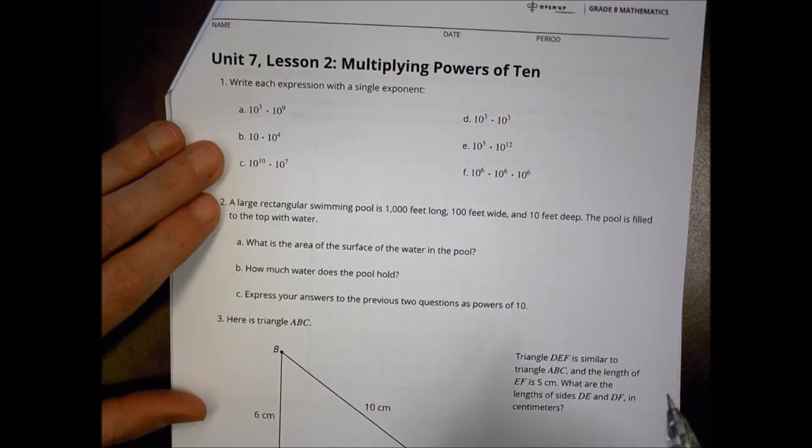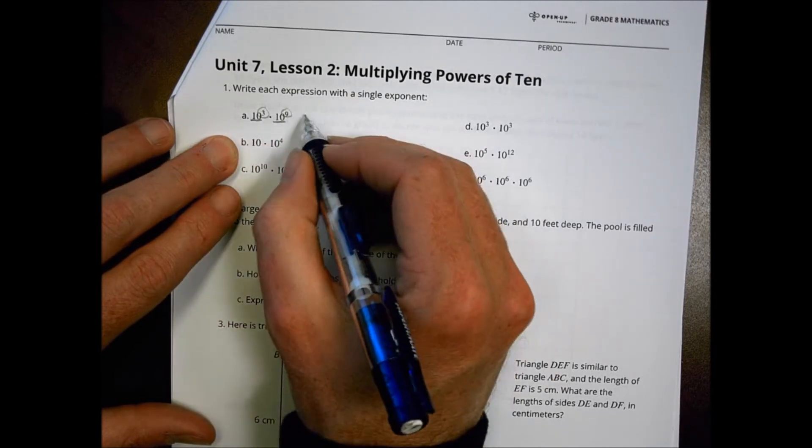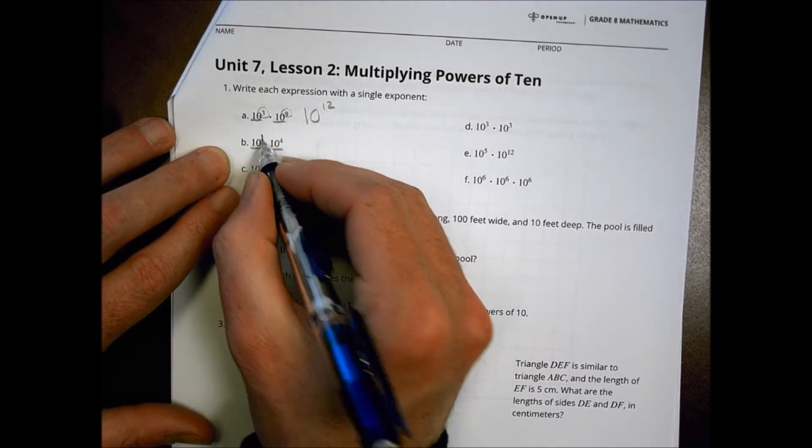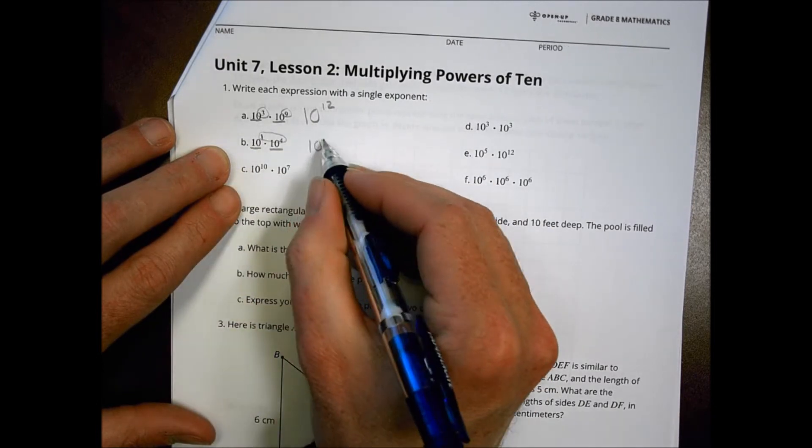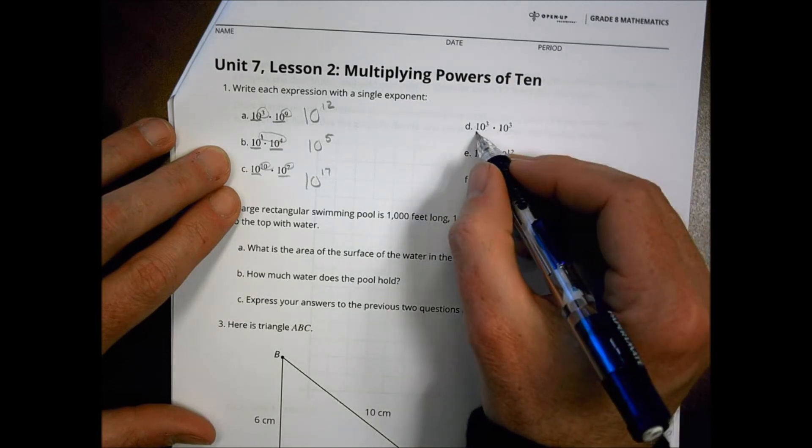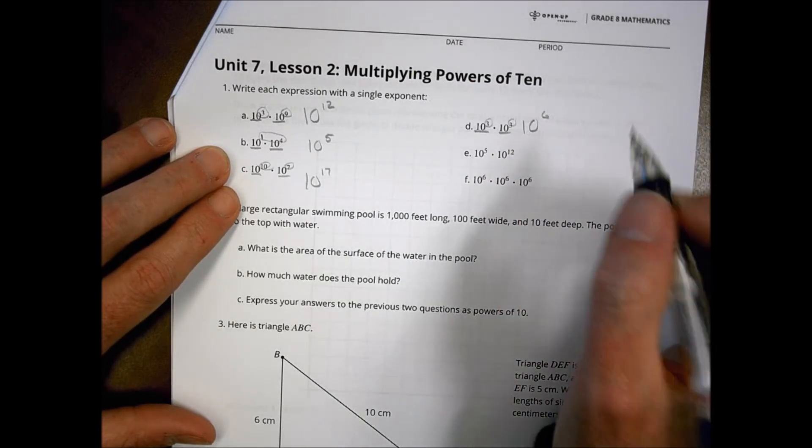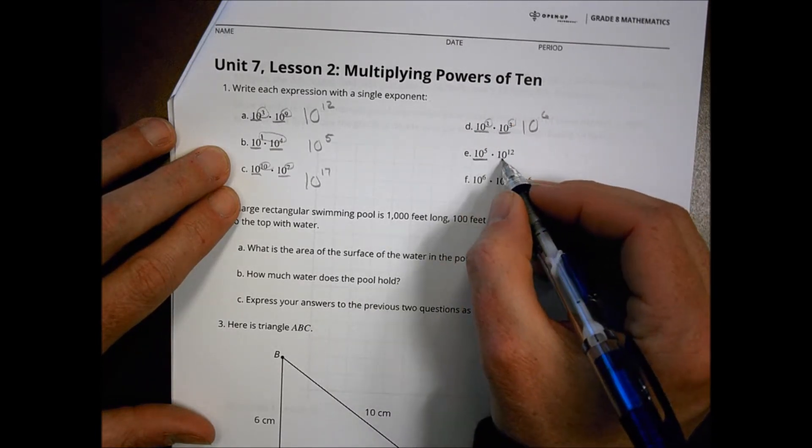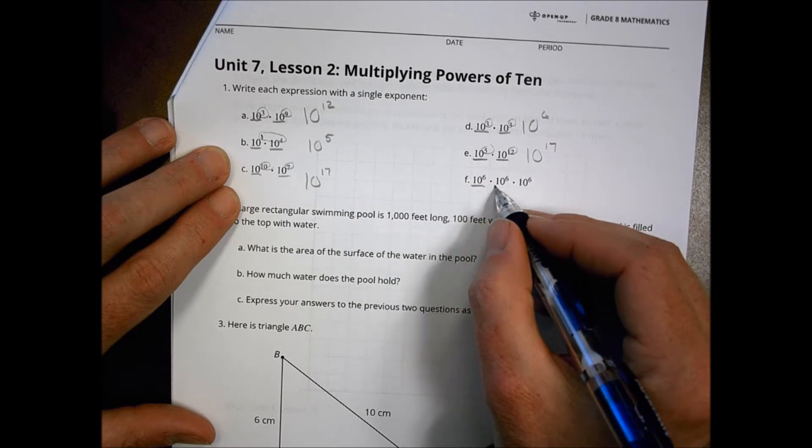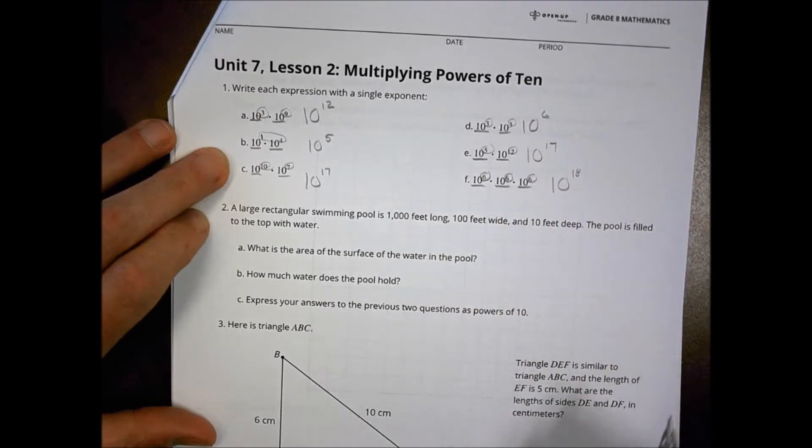Alright, homework time for Math 8, Unit 7, Lesson 2. We have the same basis, so we're going to combine the exponents. Three plus nine is 12, so it's 10 to the 12th power. Same basis, let's put a one right there, so it's implied. One plus four is five. Here again, same basis, 10 plus seven is 17. Same basis, 10 and three plus three is six. The early addition here at the answer key showed a nine, that would be incorrect. So three plus three is six. This one is a base of 10, adding the exponents, five plus 12 is 17. Here we have 10, 10 and 10, all bases are the same. Let's add up what we have on the exponents: six plus six is 12 plus six is 18.